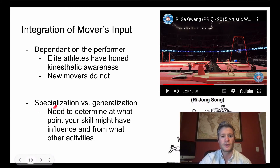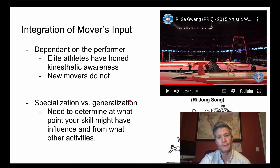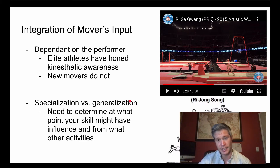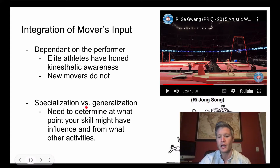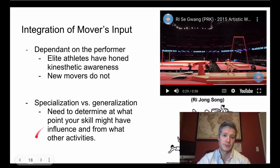You can include information about specialization into a certain motor sport in your intake form before you get feedback. Trying to figure out whether your mover's skill has transference is important. For example, it's up to you to determine what might be transferable skills between a hockey shot and a golf shot. If someone has 10 years of golf experience, you might want to consider whether that will have a significant impact on their hockey shot.